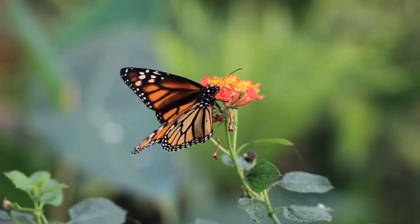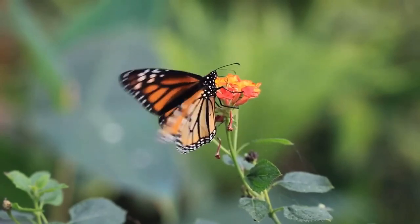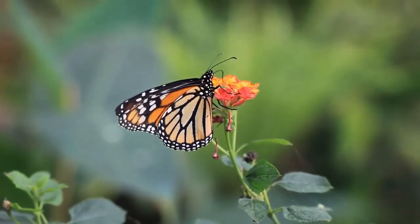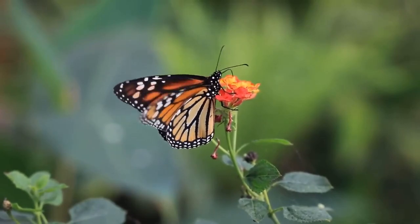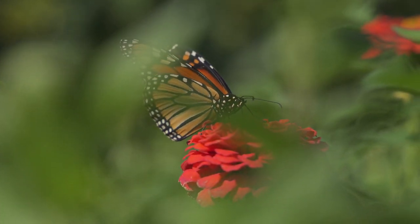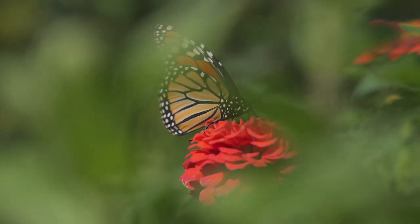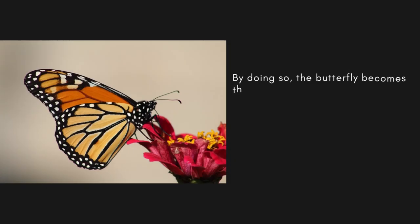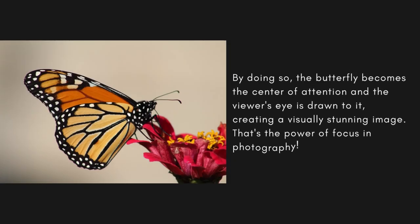Let's start with an example. Imagine you're on a nature walk and come across a beautiful butterfly perched on a flower. You want to capture its delicate beauty and intricate patterns. To achieve this, you need to ensure that the butterfly is in focus while the background remains blurred. By doing so, the butterfly becomes the center of attention and the viewer's eye is drawn to it, creating a visually stunning image.